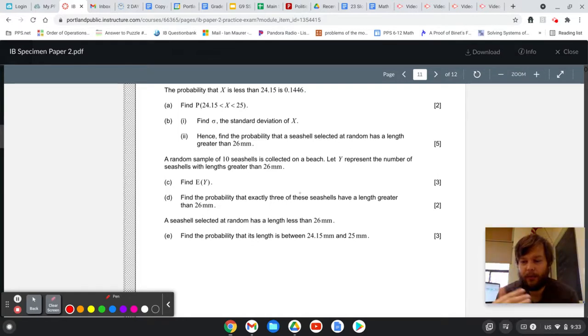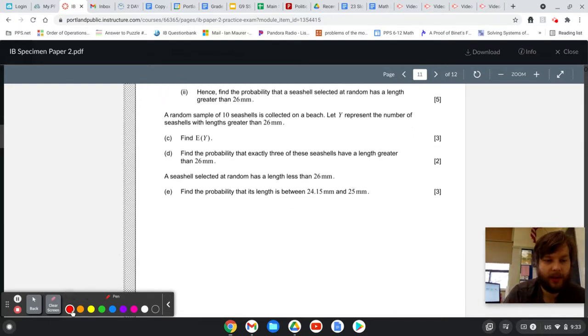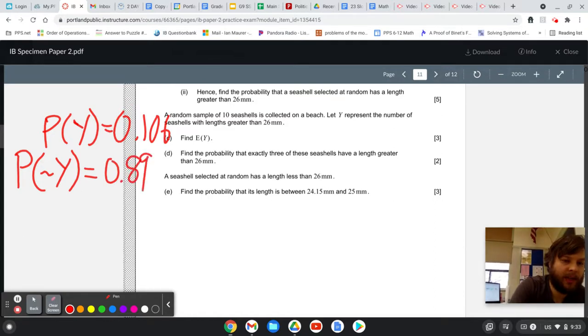And so we just found that probability, and now we have two situations. You're either greater than, or you're not greater than. And so the probability of being greater than 26, which we can write as P of y. P of y is equal to 0.106. And then we can also, and you should get in the habit of doing this, the P of not y is whatever's left over, 1 minus the answer. So the probability of not being greater is 0.894.